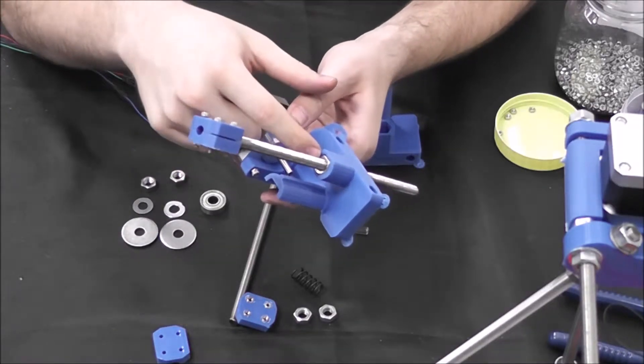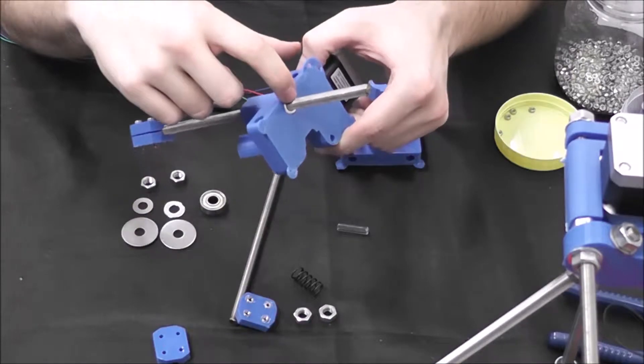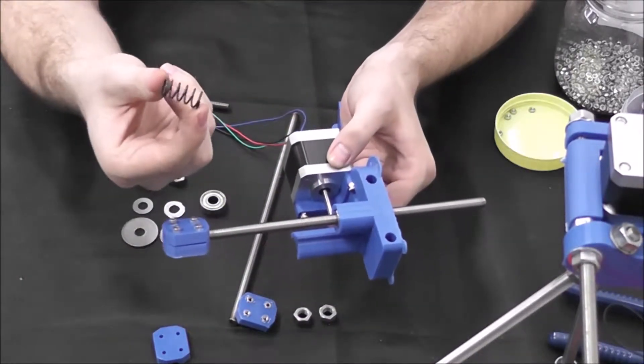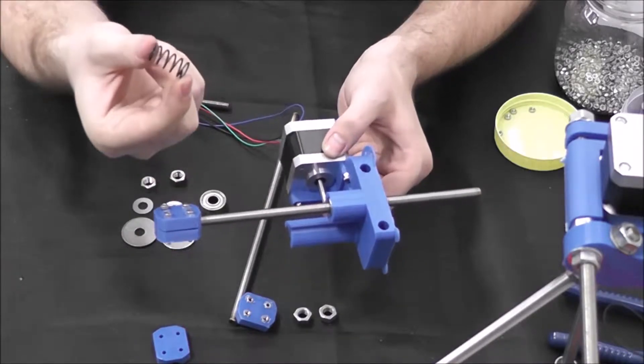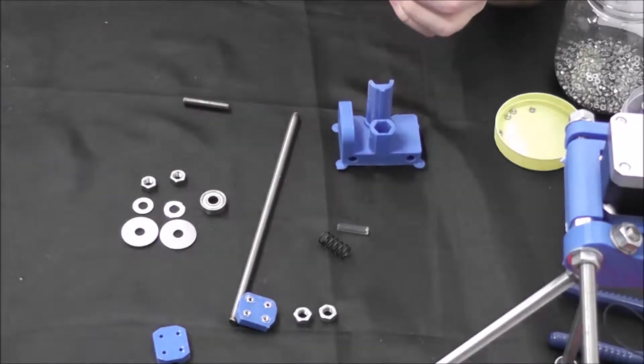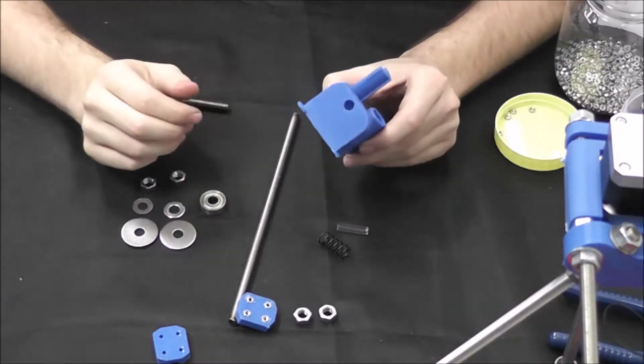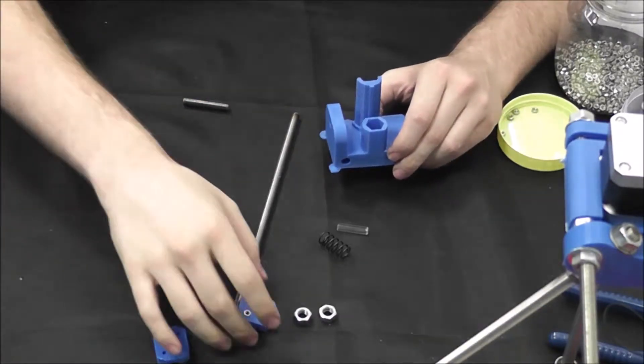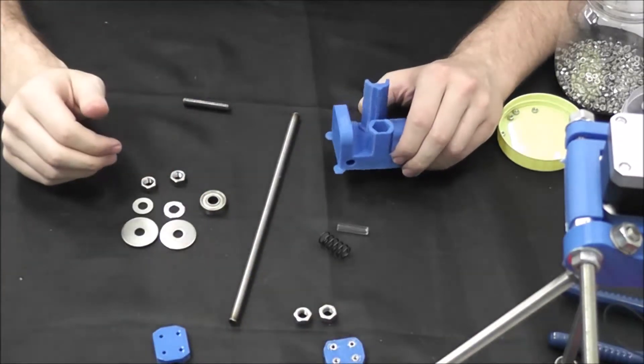Basically what's in here is you can see an M8 nut right there, an M8 nut on the outside, and then between the two there is a Z spring. It's the wide bore spring that comes with the printer. We're going to go ahead and set that aside and do the X idler.